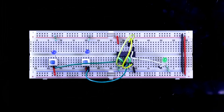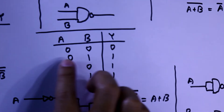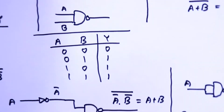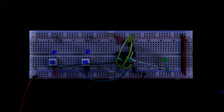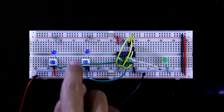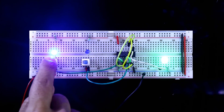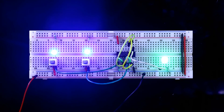Now I am connecting +5V. With both inputs at 0, the output is 0. When input A=0 and B=1, output is 1. When A=1 and B=0, output is 1. And when both inputs are 1, we are getting output 1.